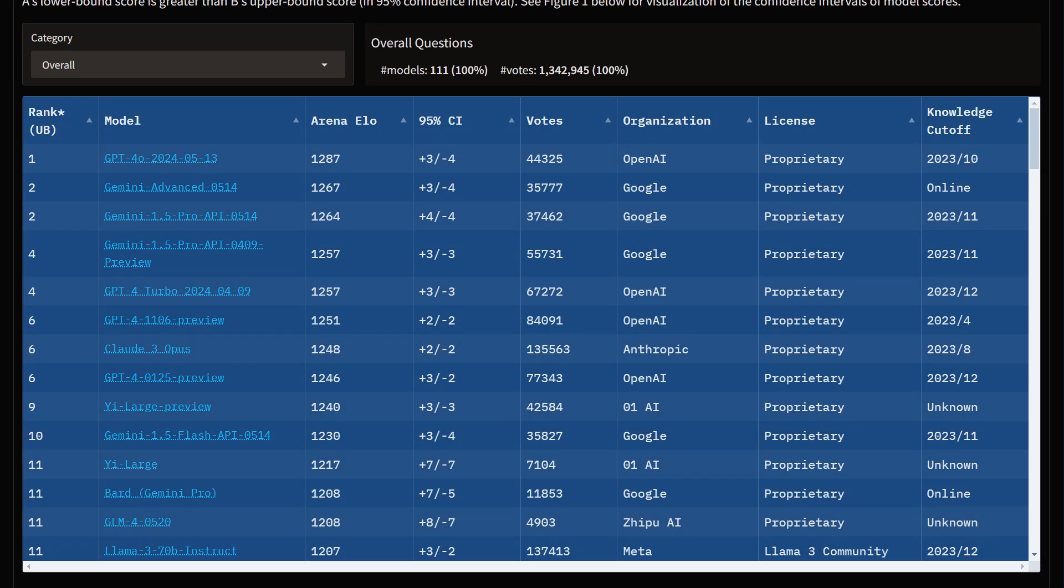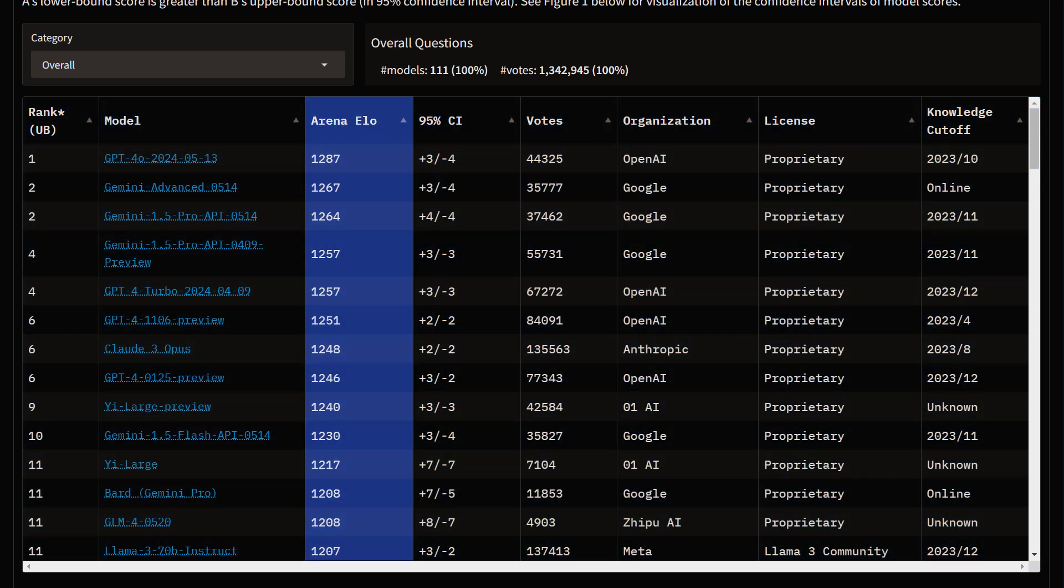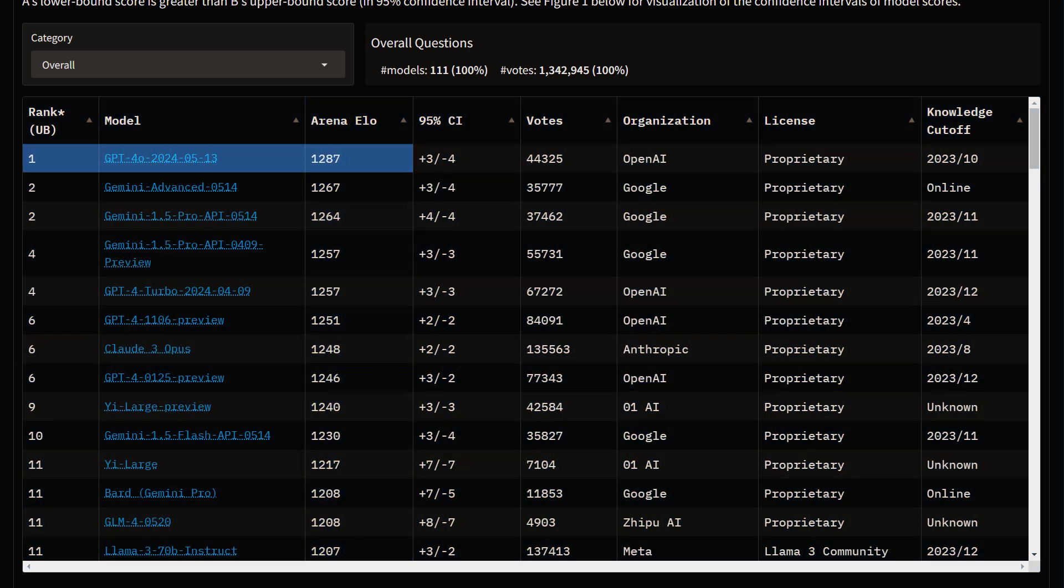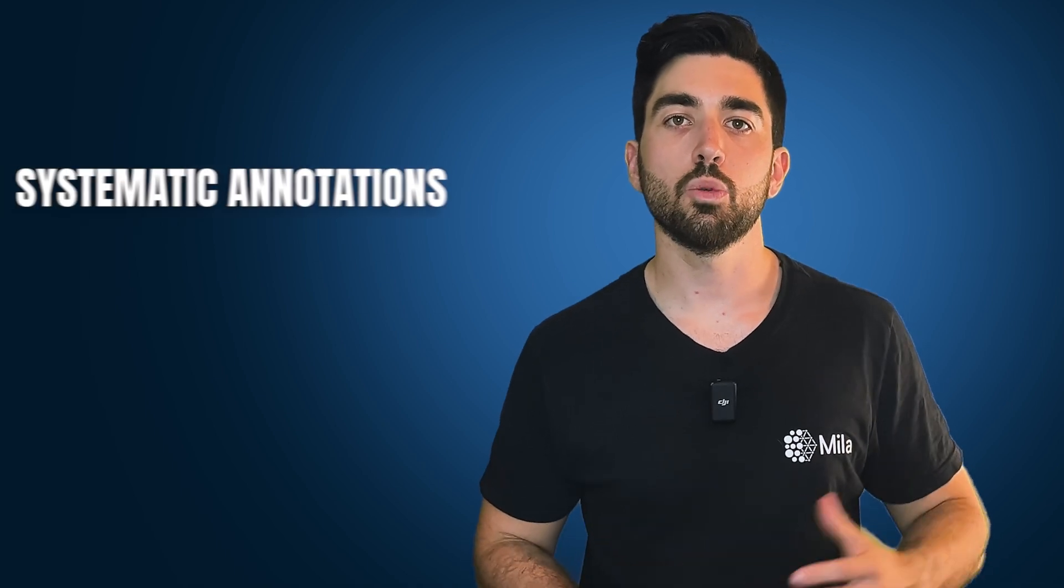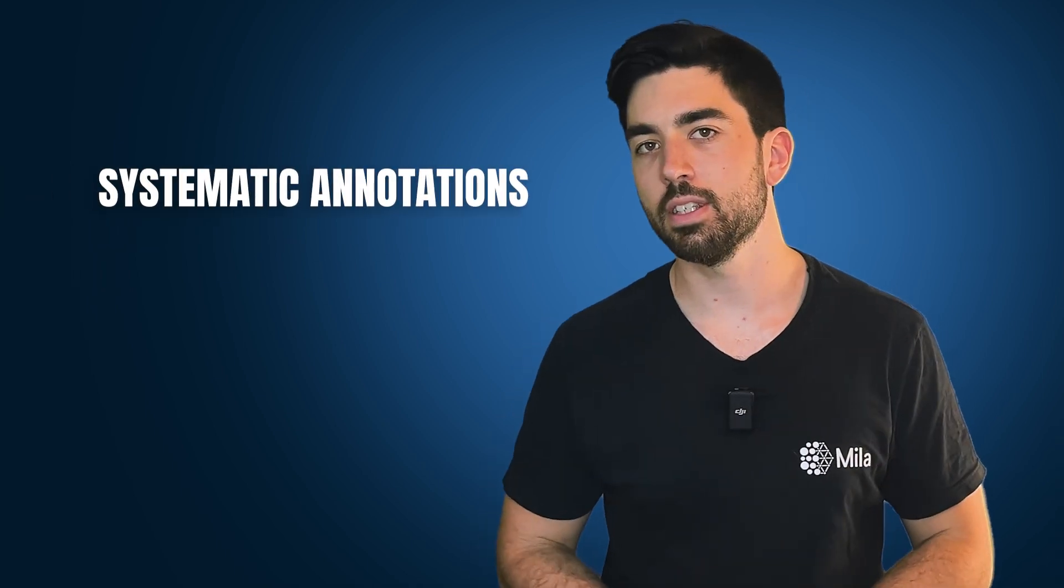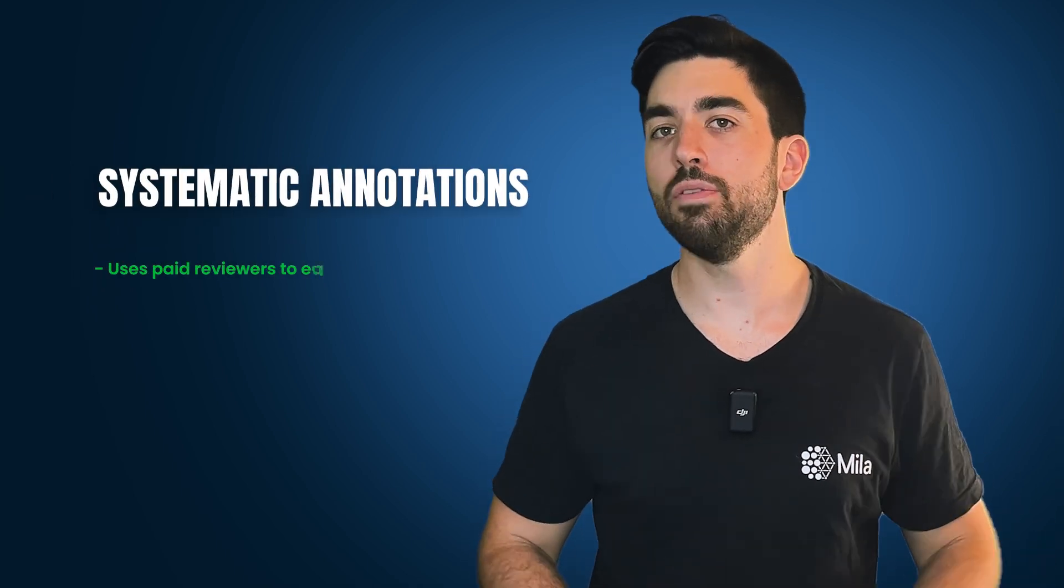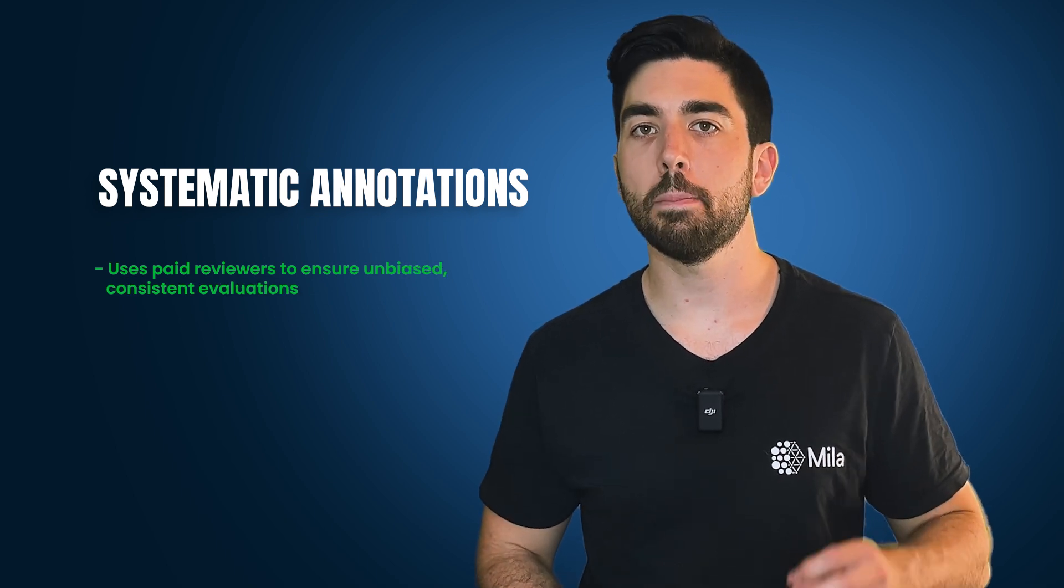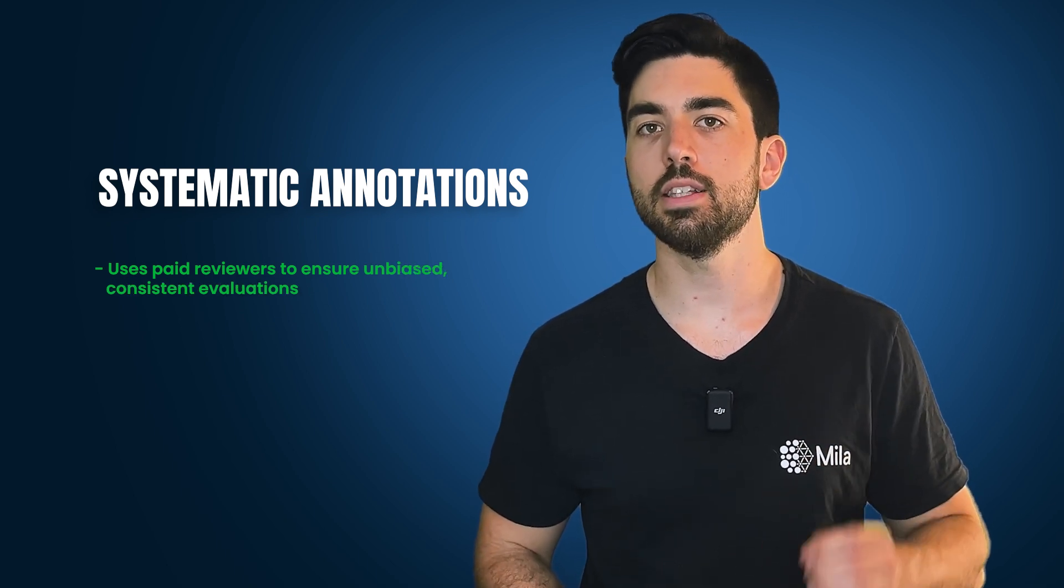The votes are then compiled dynamically to create the leaderboard and have an ELO ranking system. This is where the recent GPT-4-0 with the secret name GPT-2 chatbot made a lot of noise in the LMSYS chatbot arena. Finally, we have the most obvious one, which we call systematic annotations.